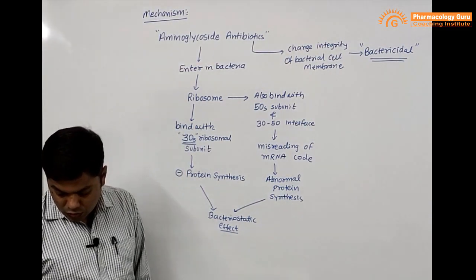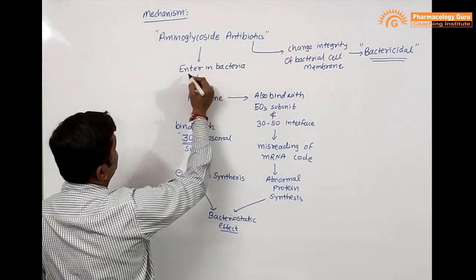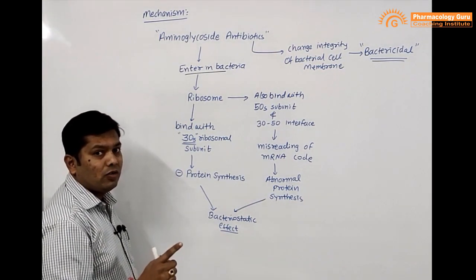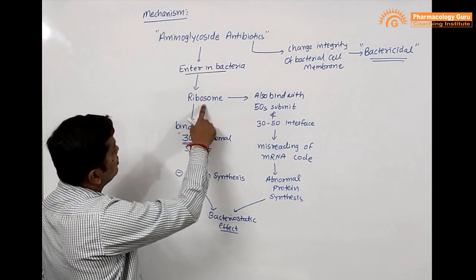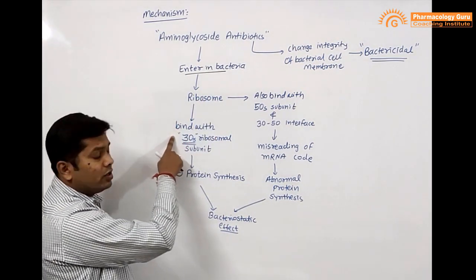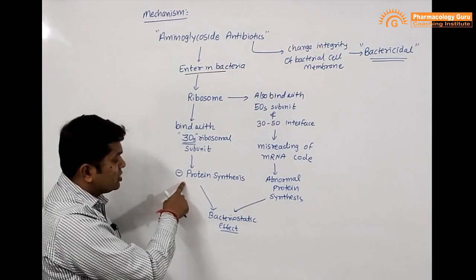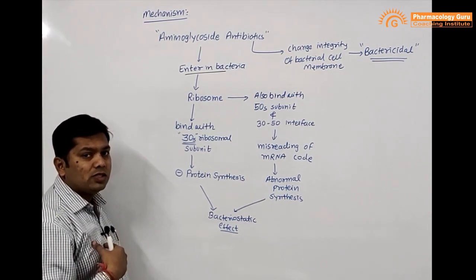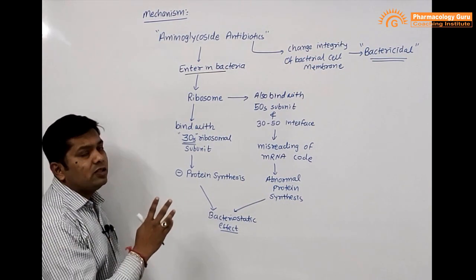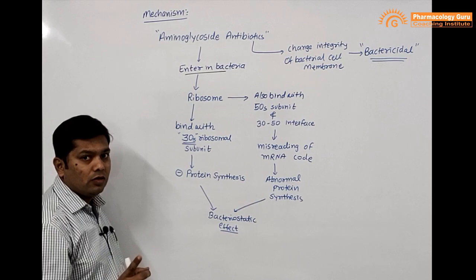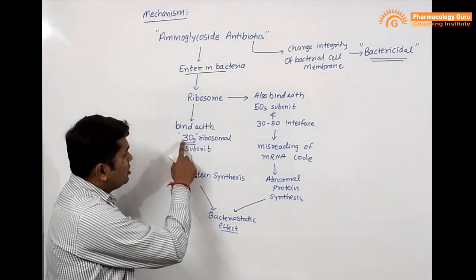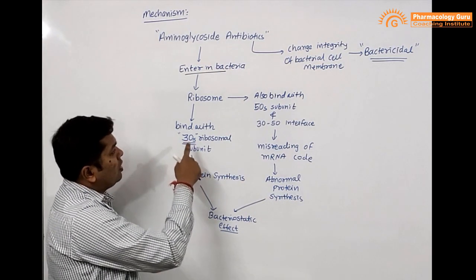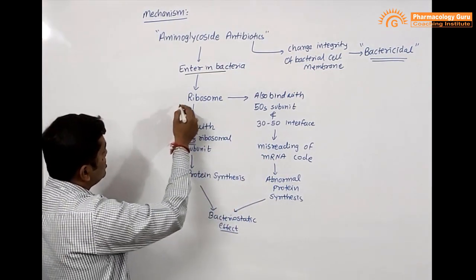To summarize: aminoglycoside antibiotics enter into bacteria in an oxygen-dependent manner, so they are effective only in aerobic microorganisms. Their target site is ribosomes, where they bind with the 30s ribosomal subunit and inhibit protein synthesis. Bacteria have 30s and 50s ribosomal subunits, while human cells have 40s and 60s, so aminoglycosides do not affect the host cell.